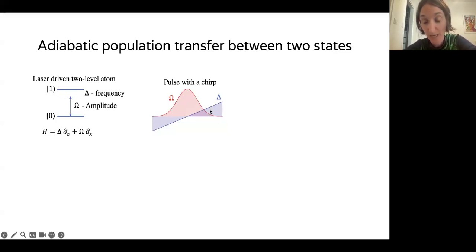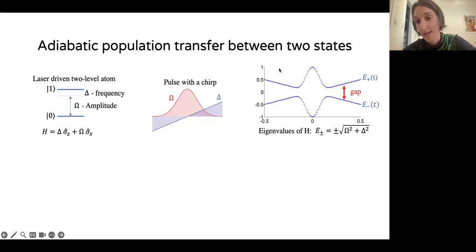Here's the protocol for adiabatic population transfer. We can just apply a pulse with a chirp. Omega here, the red curve is the envelope of the field, and delta is the frequency of the laser being swept from very negative to very positive, or from very low to very high through the atomic resonance. So here we have a two-by-two Hamiltonian. We can plot its eigenvalues. And here are the eigenvalues as a function of time. You can see that the system is gapped. So if we change omega and delta slowly enough, if we begin in the ground state, we will end up in the ground state. In this protocol, the ground state changes from zero at the beginning to one in the end. So that's why this is an adiabatic protocol for population transfer, and that's the story for a closed system.